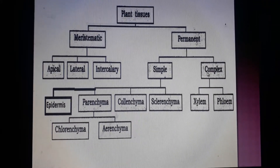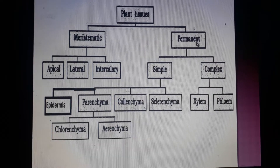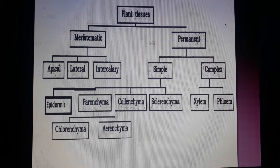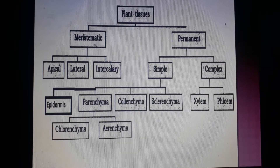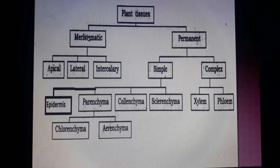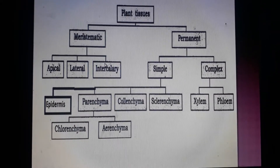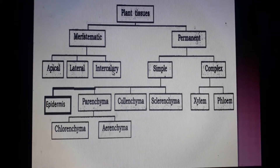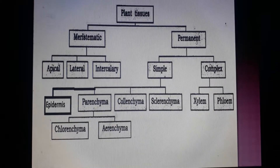Here I have drawn a very complicated chart. In biology we have many scientific terms, so you have to learn those scientific terms. Draw this chart in your notebook and learn the names. Plant tissues are of two types: meristematic and permanent. Meristematic tissues are of three types: apical meristem, lateral meristem, and intercalary meristem. Permanent tissues are of two types: simple and complex.